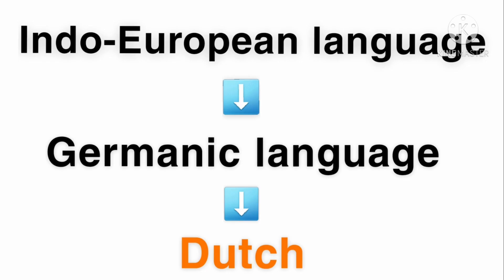First of all, Dutch is an Indo-European language. Furthermore, it's a Germanic, a West Germanic language, which means it's most related to German and English.